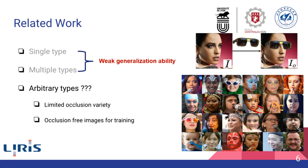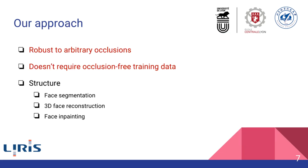There are two main difficulties. First, the limited occlusion type variety in the training data, and second, the need for occlusion-free ground truth images. Our method solves the above problems. It is robust to arbitrary occlusions and doesn't require occlusion-free training data. It is composed of three submodules: the face segmentation module, the 3D reconstruction module, and the face imprinting module.